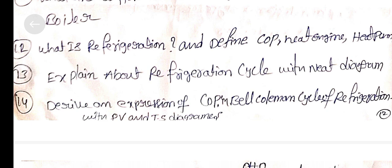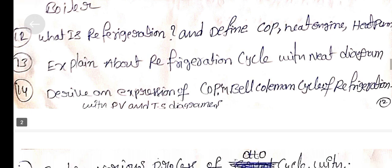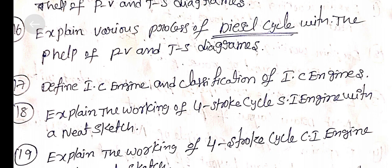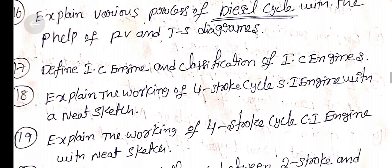Question 13: Explain about the refrigeration cycle with a neat diagram. Question 14: Derive an expression of COP in the Bell-Coleman cycle of refrigeration with PV and TS diagrams. Question 15: Explain various processes of the Otto cycle with PV and TS diagrams. Question 16: Explain various processes of the diesel cycle with the help of PV and TS diagrams.